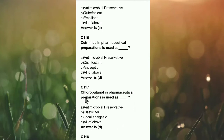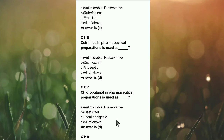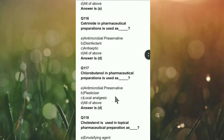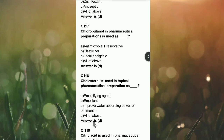Question 117: Chlorobutanol in pharmaceutical preparations is used as antimicrobial preservative, plasticizer, local analgesic, or all of the above? Chlorobutanol is used as an antimicrobial preservative, plasticizer, and local analgesic — right answer is D.